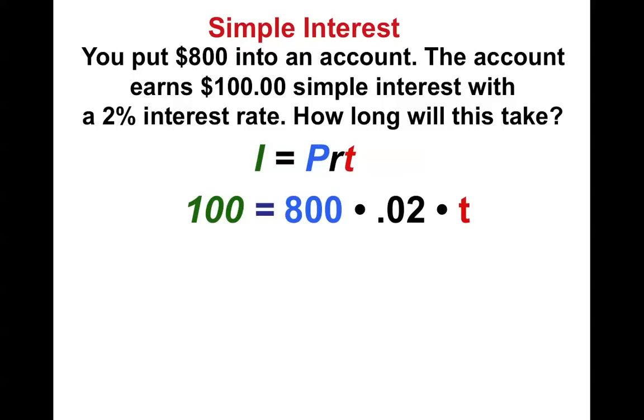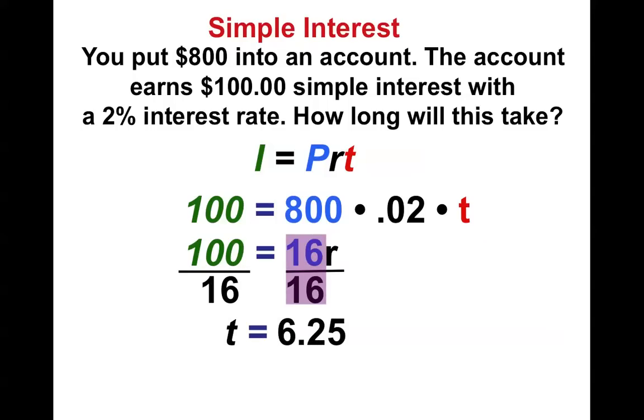So when we plug in, notice the only thing we don't know is how long, how many years it's going to take. So 800 times 0.02 gets you 16. 16 divided by 100 gets you 6.25. To earn that $100, an extra $100 on $800, it would take 6.25 years to earn that money.